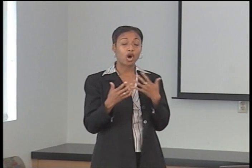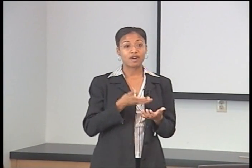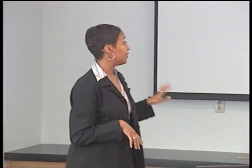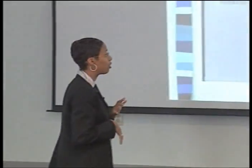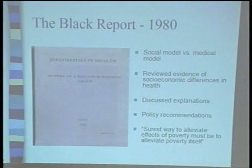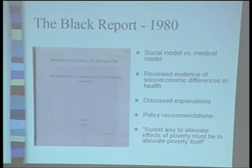The Black Report called for a social model of health — shifting from a biomedical paradigm to a biopsychosocial approach — really starting to think about the interaction of biological, behavioral, social, physical, chemical, and built environmental factors in contributing to population health outcomes. The report examined health disparities patterned by socioeconomic status, and not only identified social factors but also provided policy recommendations aimed at alleviating some of these issues.